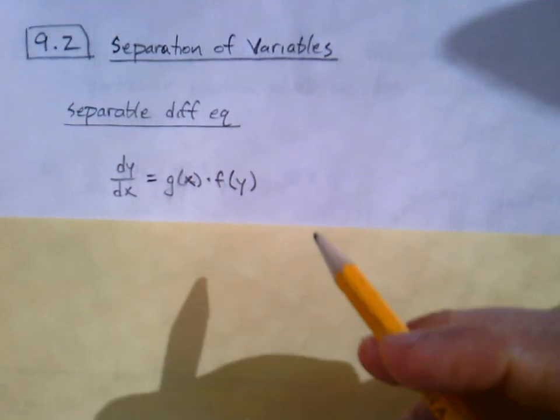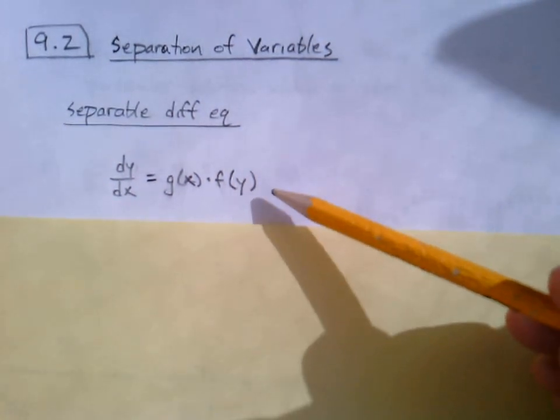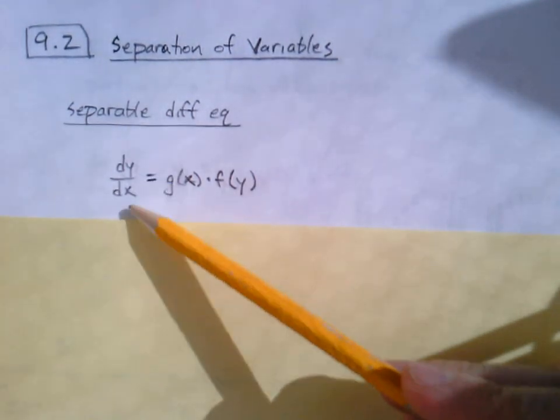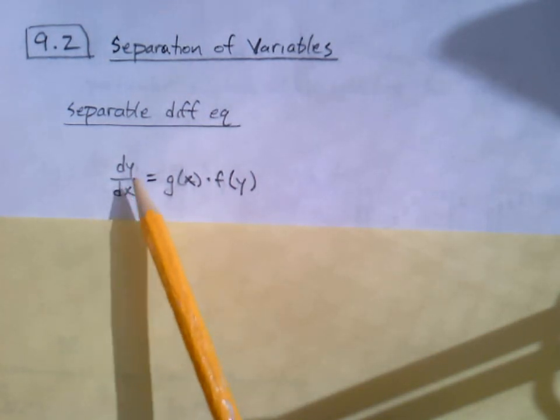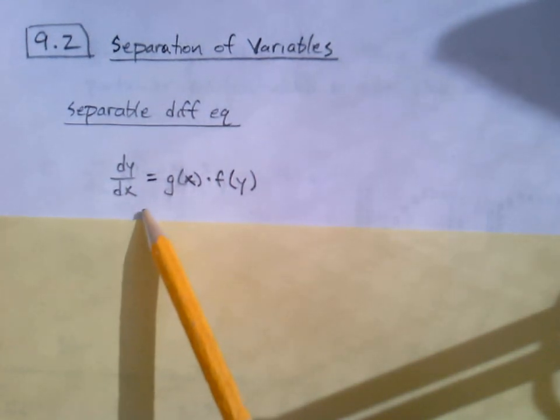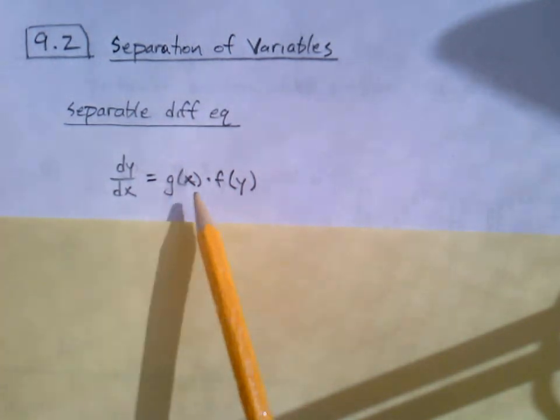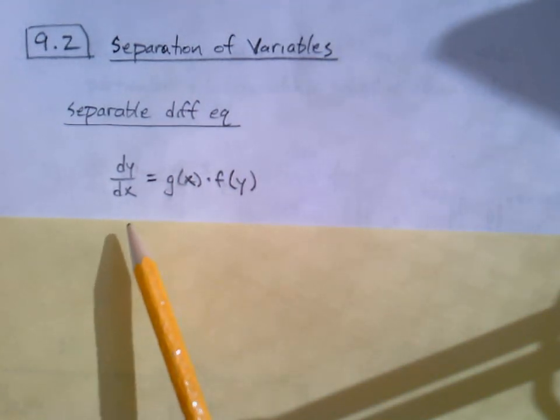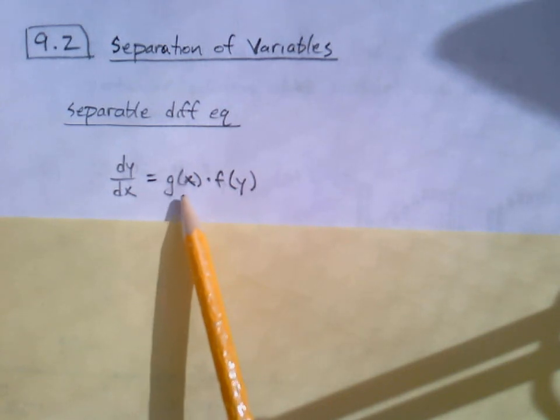Same idea with differential equations. Separation of variables - what is that? A separable differential equation is one that can be thought of in this form: dy over dx. Sometimes we write y prime, sometimes it's more convenient to write dy over dx for the derivative. This is the preferred way in this section.